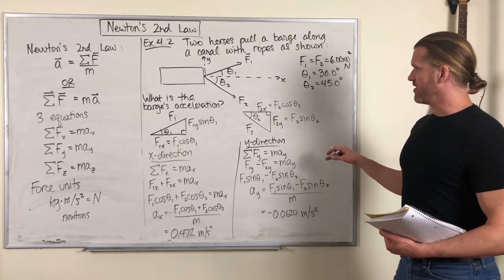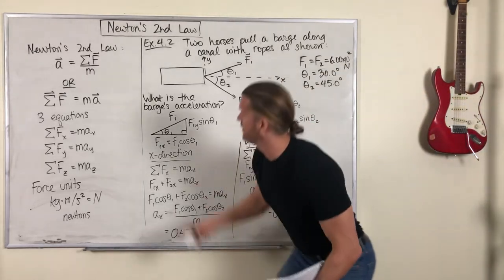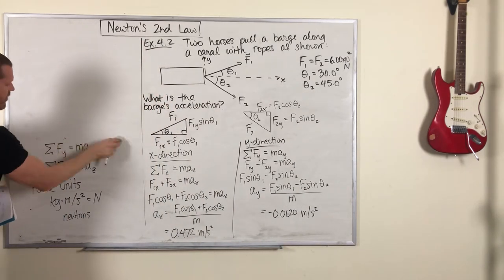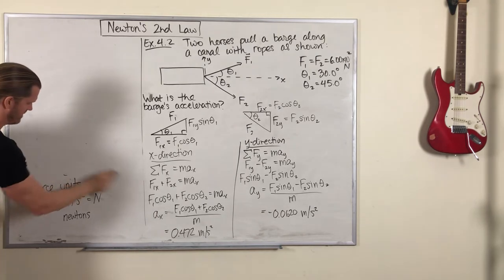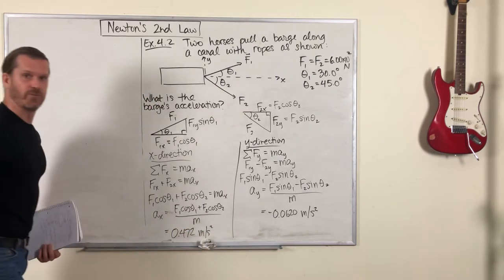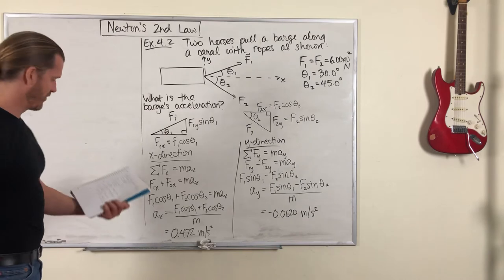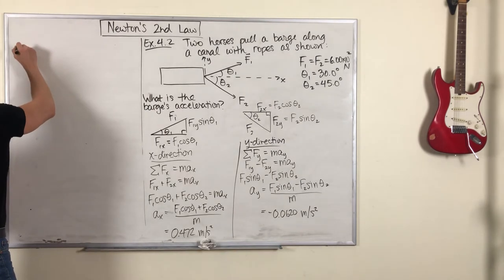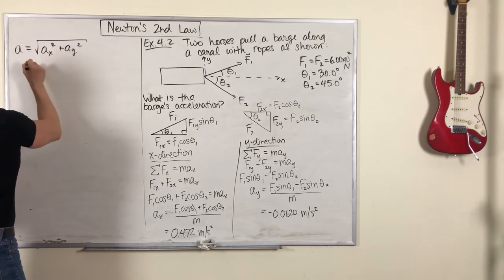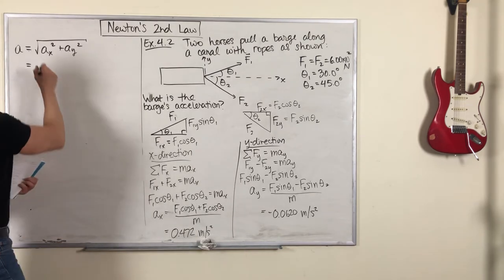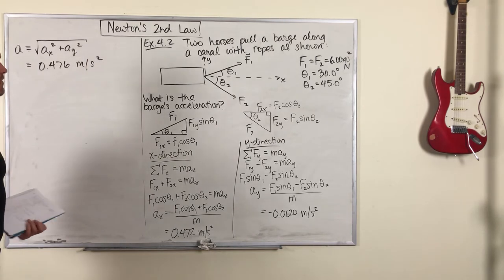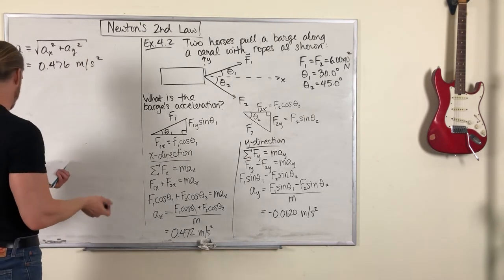I'm running out of room here. I think I can erase this stuff now. We have expressed our acceleration in component form, but as we often want to do, we'll express it in magnitude-angle form as well. So the magnitude of acceleration is given by the Pythagorean theorem, 0.476 meters per second squared, and the angle of that net acceleration vector.